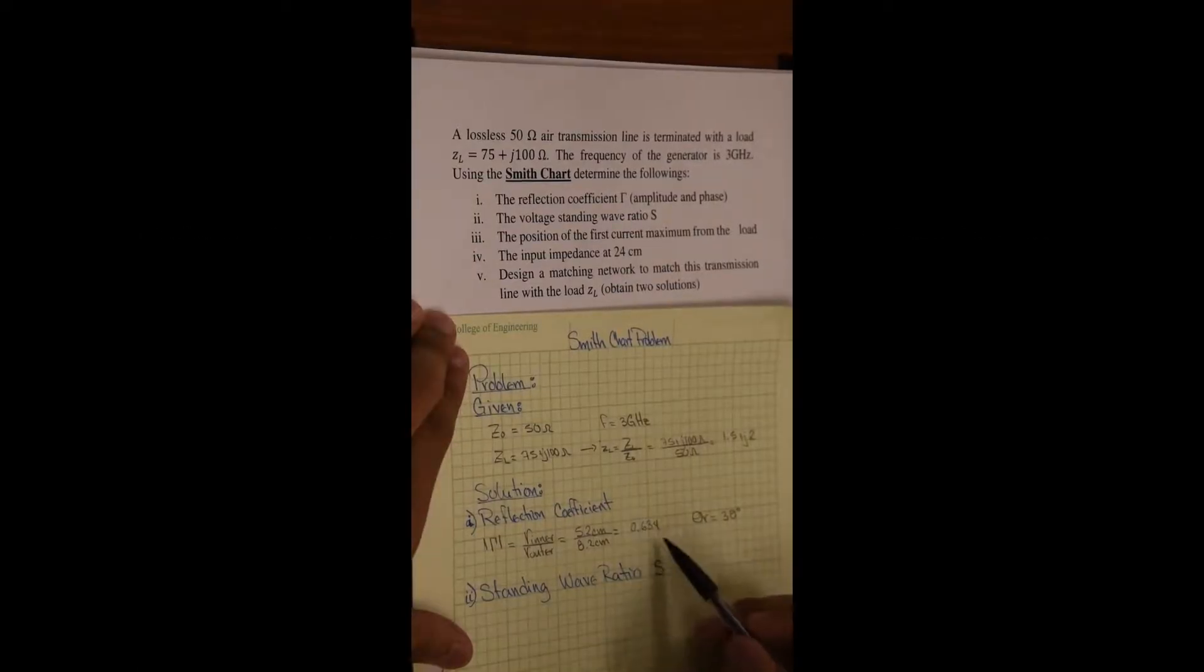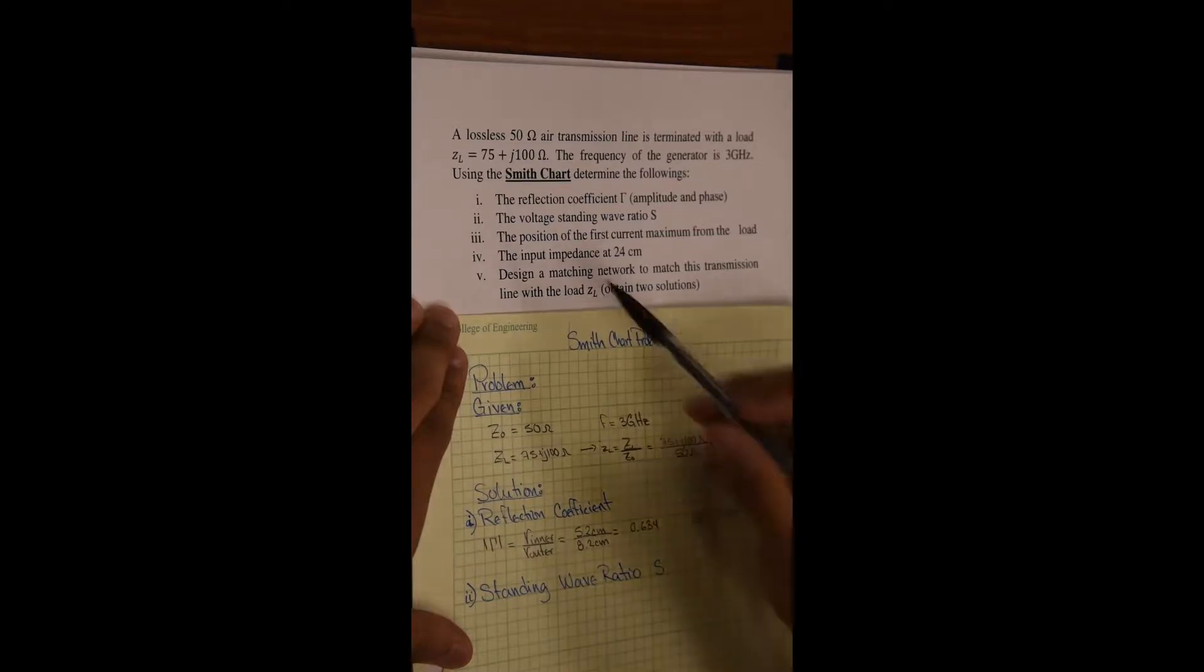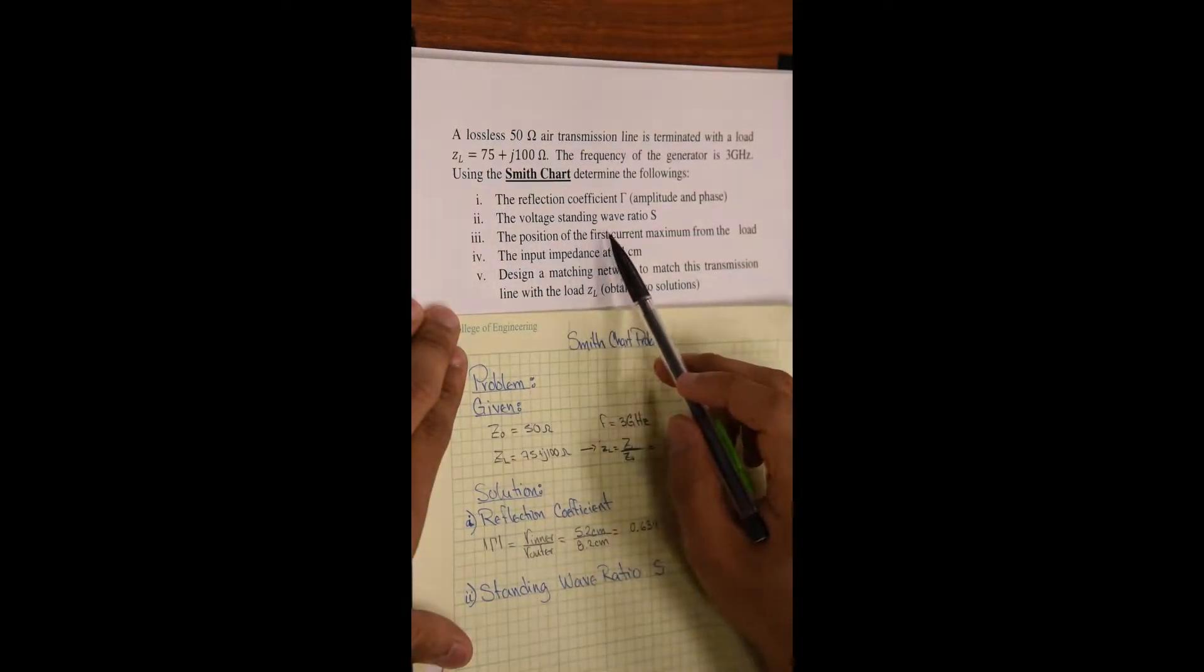Now that we found the magnitude of our reflection coefficient and the phase of the reflection coefficient, we can then move to the second part and find the voltage standing wave ratio.